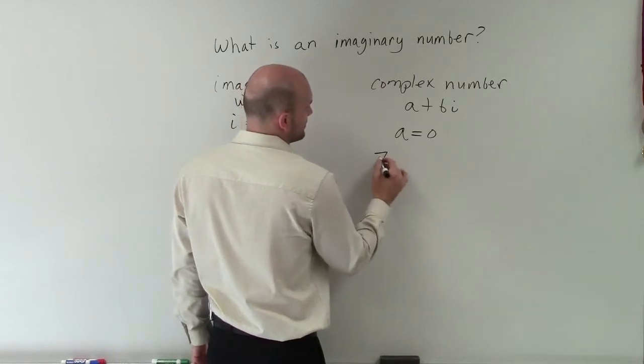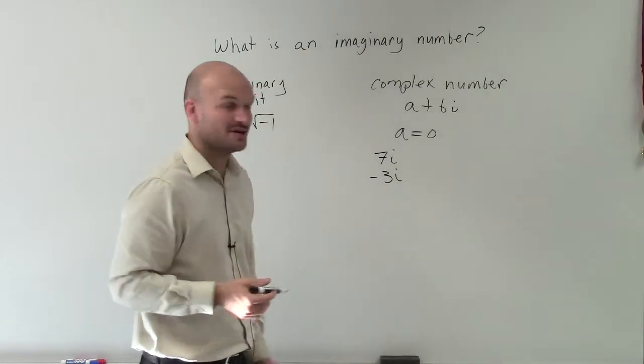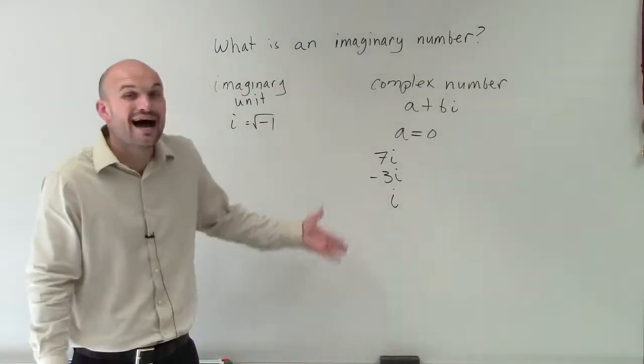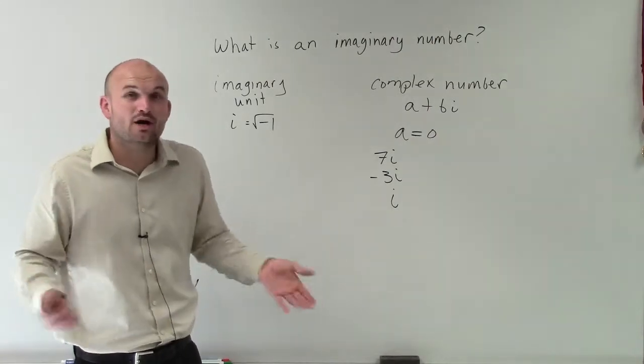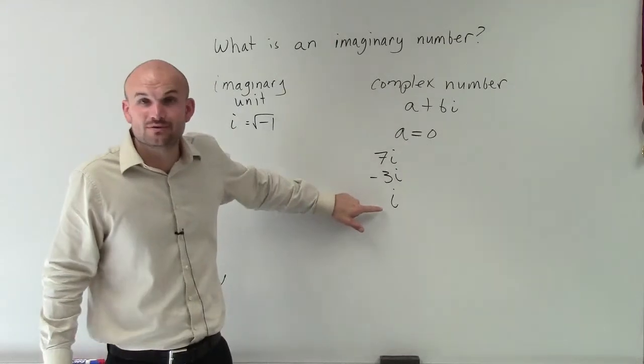We could have 7i is an imaginary number. Negative 3i is an imaginary number. And just our unit i, that's also just what we call an imaginary number, because our a, in the form of our complex number, is going to be equal to 0.